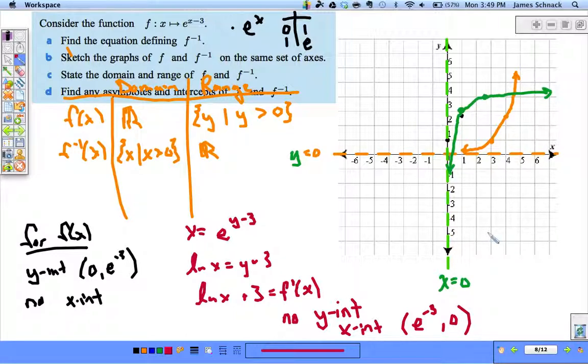So I think we've satisfied all the points here. Find the equation defining f-inverse, got it right here. Sketch the graphs on the same set of axes, there they are. Orange for f of x, green for f-inverse. State the domain and range of the two, got it. Find any asymptotes and intercepts of the two functions, got it. So there's all the bits and pieces that we need.